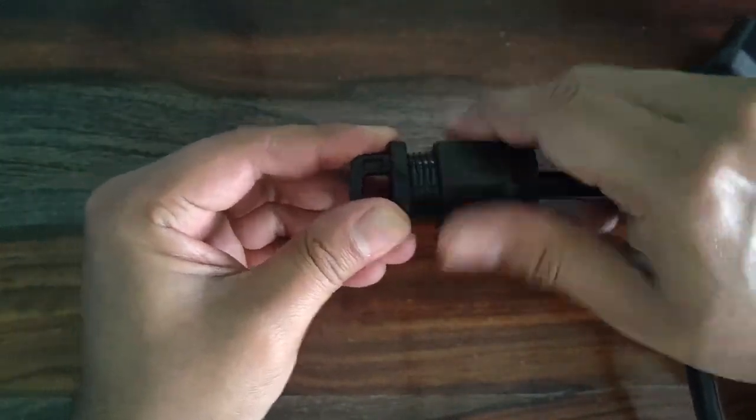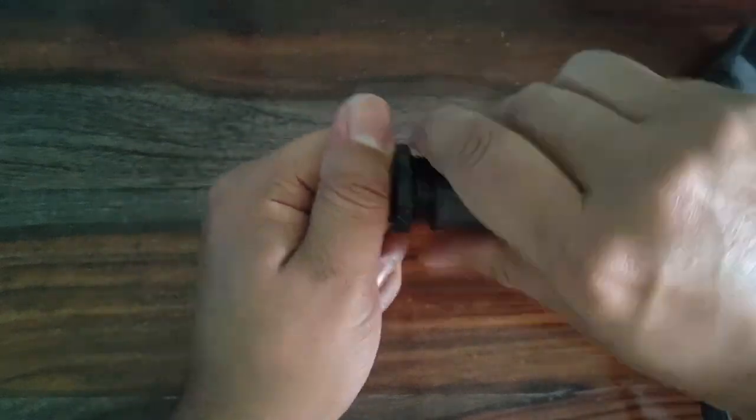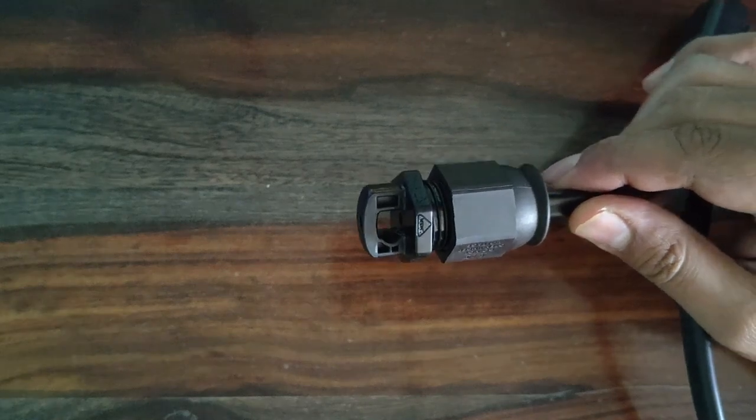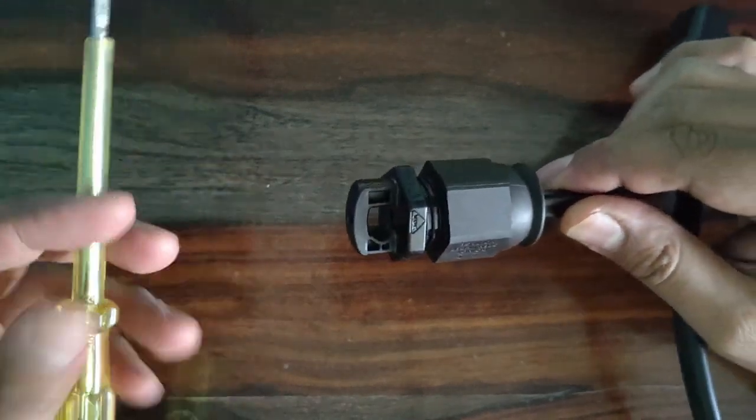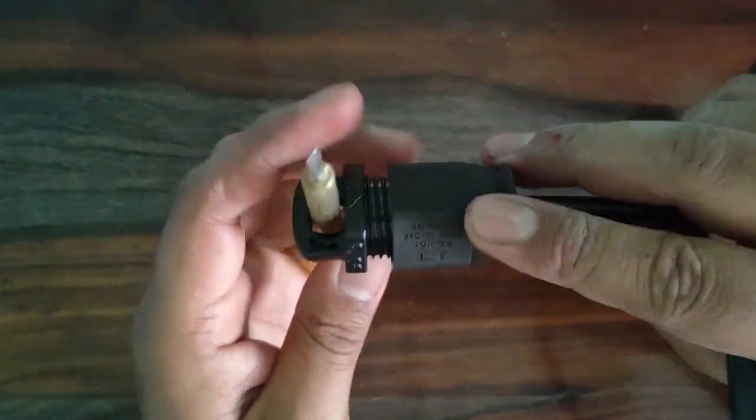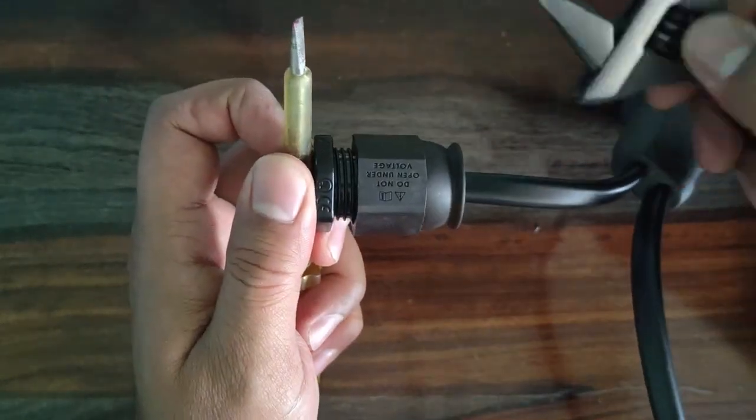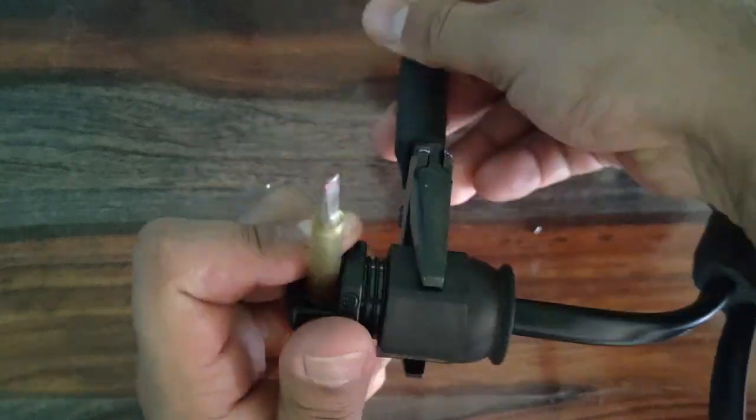Tighten the hex nut. Insert a screwdriver into the slot on the top of the terminator to hold it in place. Tighten the nut with an open end spanner or channel lock pliers until fully tightened.